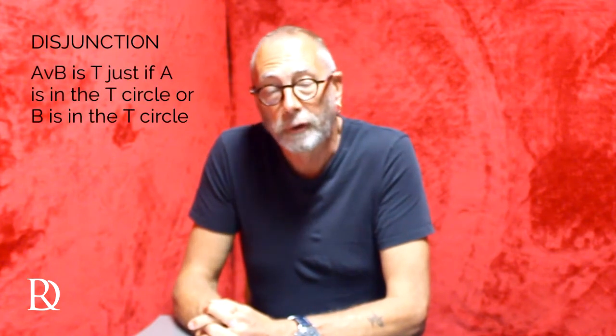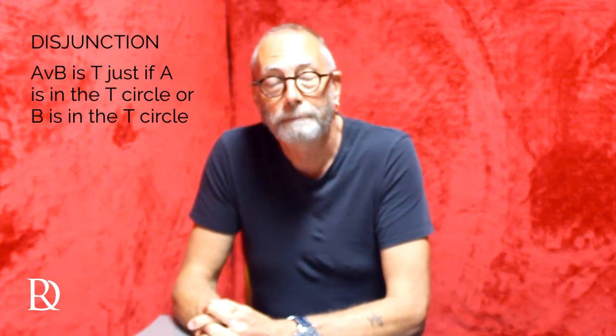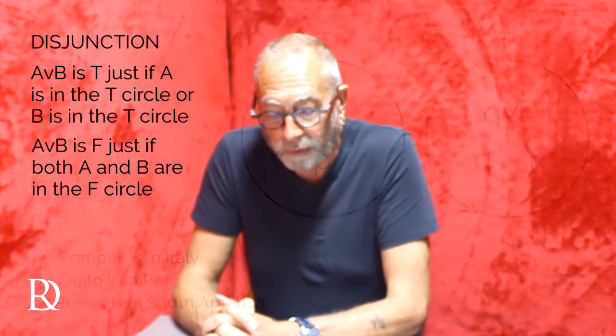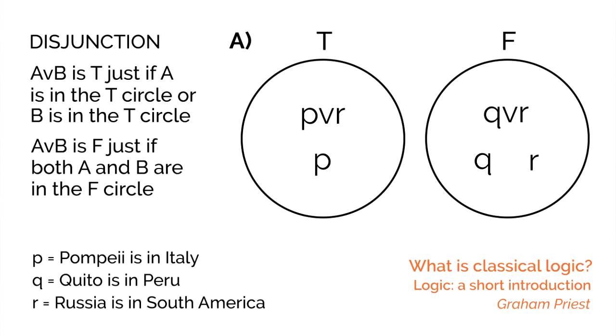What about disjunction — what are the conditions which put sentences of the form 'P or Q' in the true circle or the false circle? The conditions are: a disjunction A or B is true if either A or B is in the true circle, and a disjunction A or B is in the false circle if both A and B are in the false circle. So have a look at situation A: P is in the true circle, and Q and R are in the false circle. So P or R is true because P is true — I put P or R in the true circle. But both Q and R are in the false circle, so that makes Q or R false — I put that in the false circle.